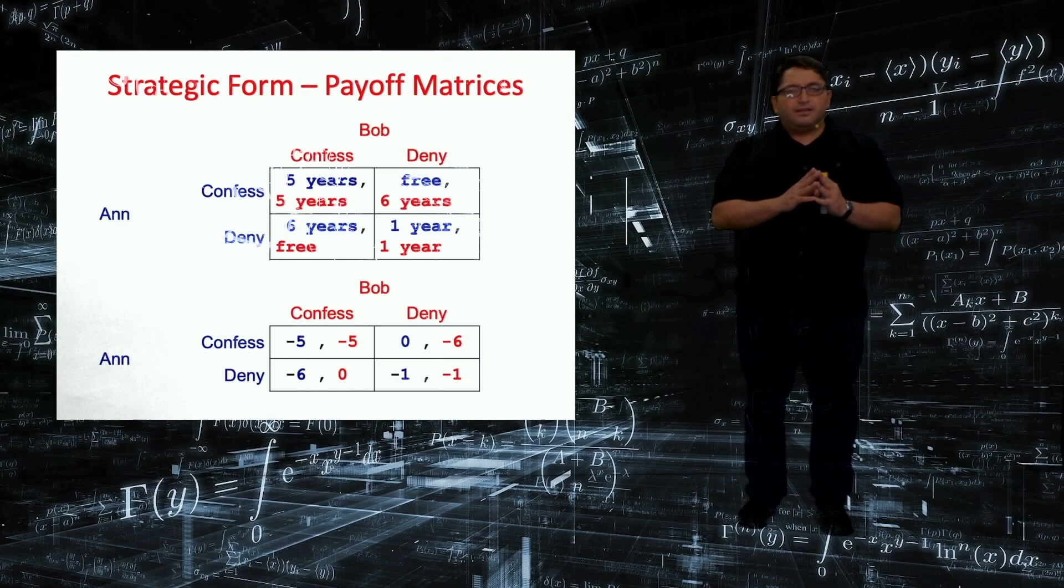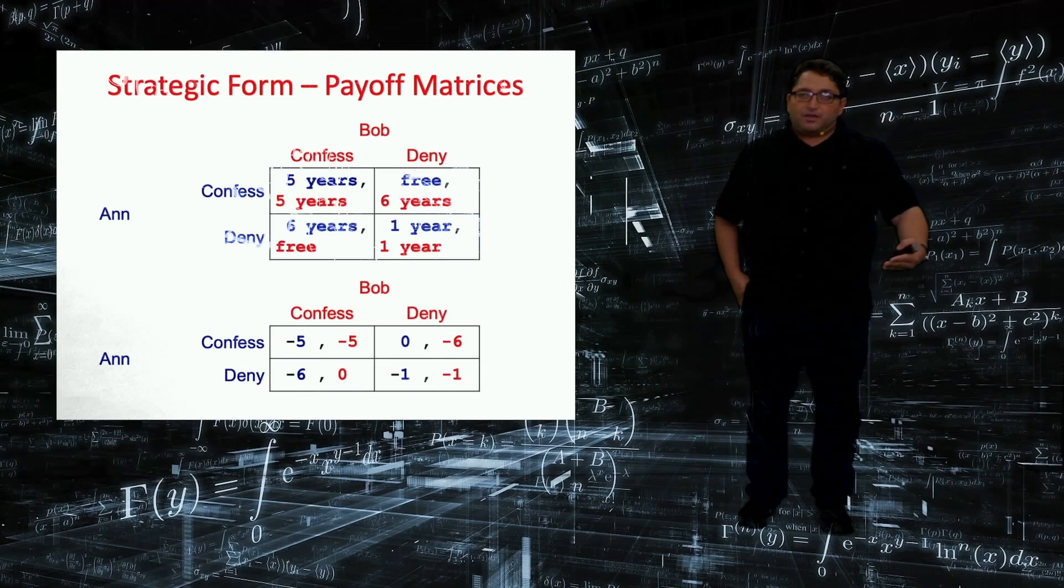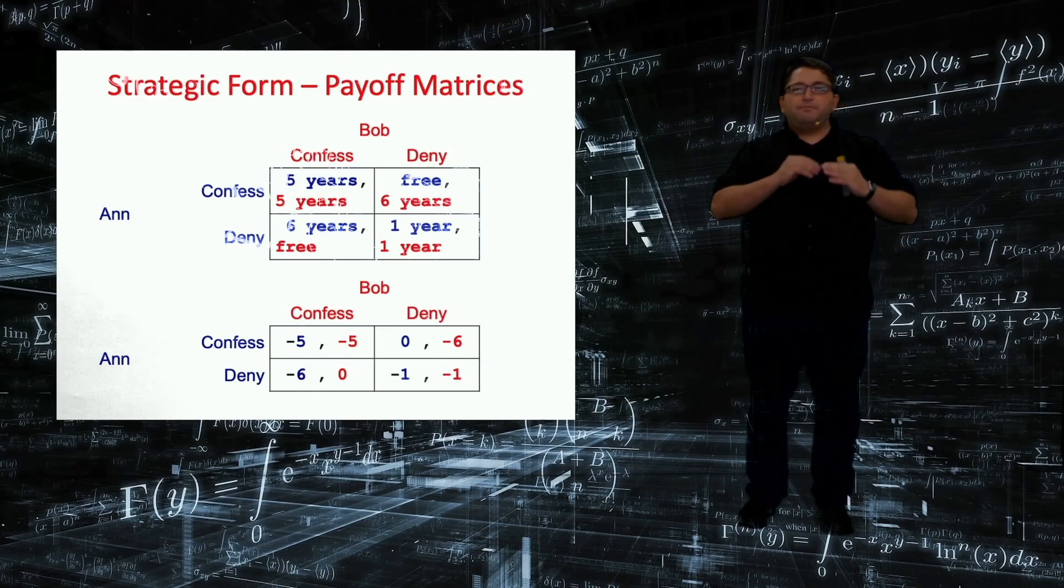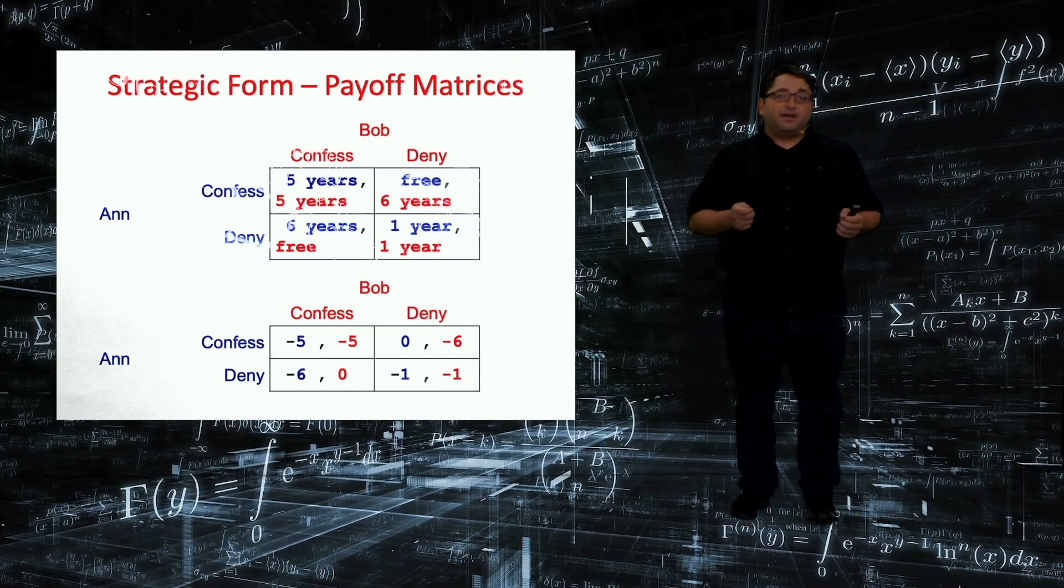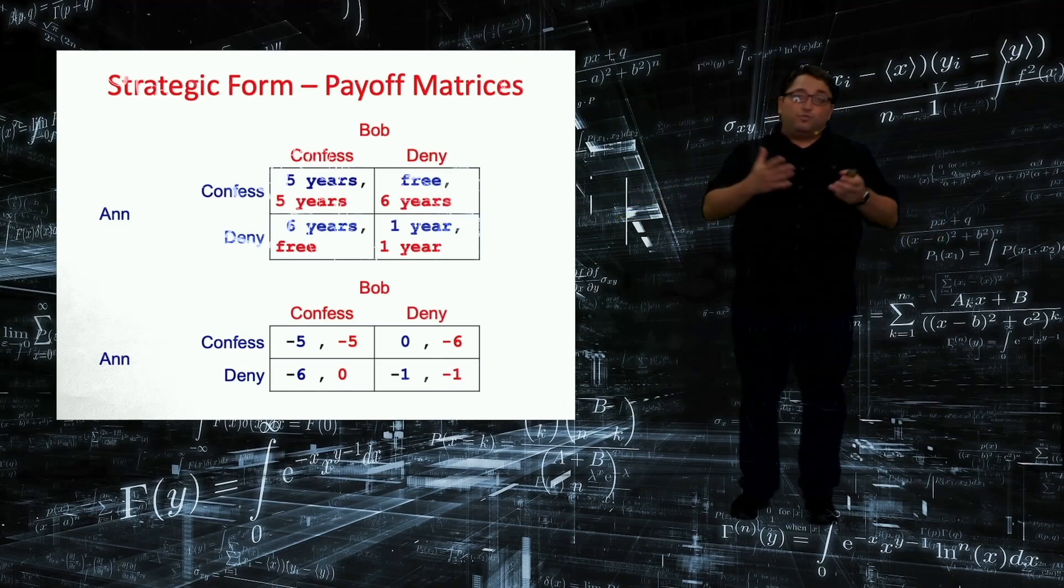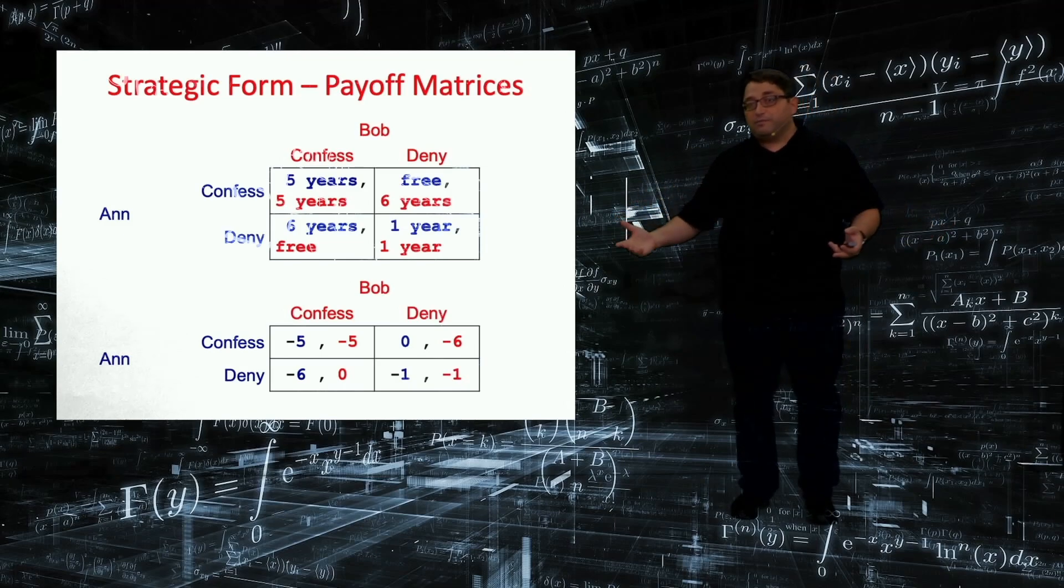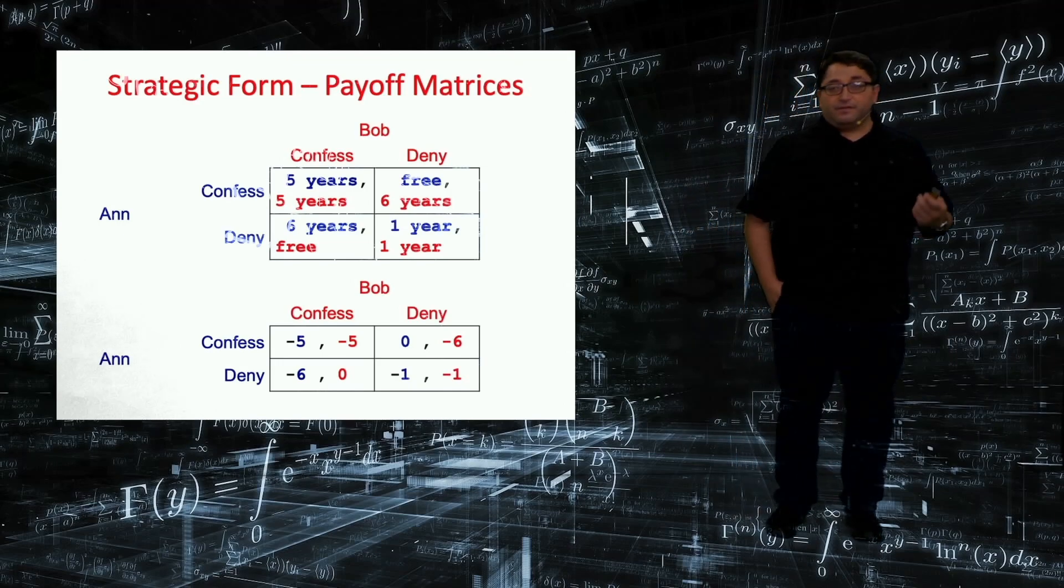I would like to emphasize the fact that in economics, the standard approach is taking preferences as ordinal. So the number, the cardinal number does not have any significance here. So what matters is being free, zero is the best outcome. Then the second best outcome is one year of prison, minus one, minus five, and minus six. But the magnitude of the numbers do not matter. It's just that I prefer to maximize that number. Zero is better than minus one, and so on. So you can easily translate it into months, like one year prison, minus 12 months, and so on. But what matters is the ranking between different outcomes.